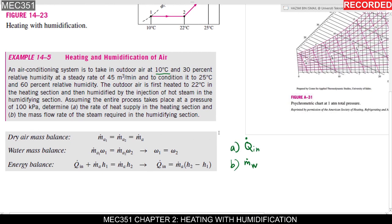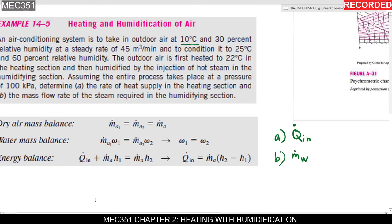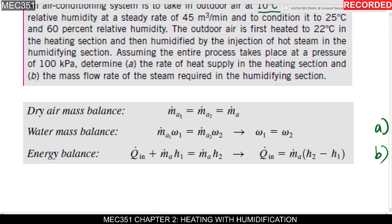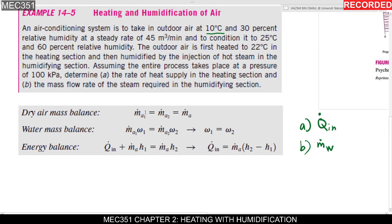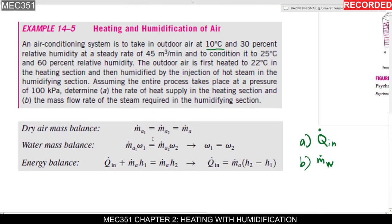Before starting calculations, write down three general equations for every heating and humidification or cooling and dehumidification problem. First: dry air mass balance — m-dot-a1 = m-dot-a2 = m-dot-a3, because dry air has no vapor added or removed, so it remains constant with no leakage throughout all states.